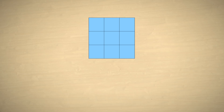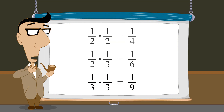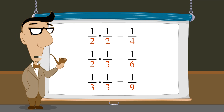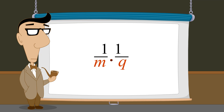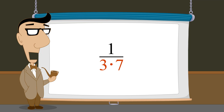If we divide the square into thirds horizontally and vertically, we will have nine equal pieces, each with an area of one-ninth. Since each piece has a height and width of one-third, we see that one-third times one-third is one-ninth. Notice that in each case, when we multiplied two fractions, we could have obtained the denominators of the result by multiplying the denominators of the two fractions. So to multiply two unit fractions, we multiply their denominators. For example, to multiply one-third times one-seventh, we multiply the denominators three and seven, so the product is one-twenty-first.